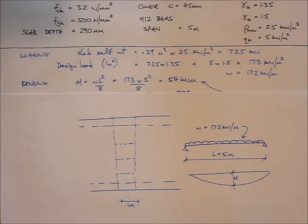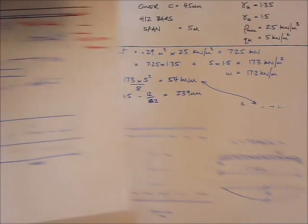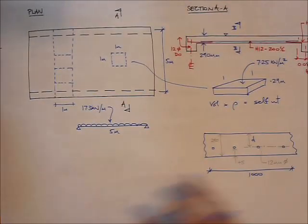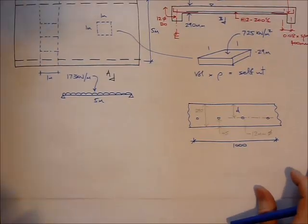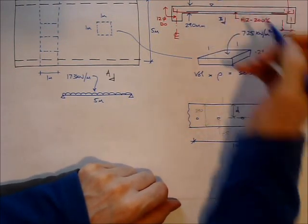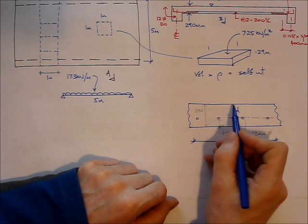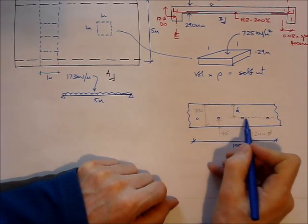Now the next job we have to do is calculate the effective depth. The effective depth is the distance from the top of the slab to the center of the steel reinforcement. I've drawn a cross section through the slab showing the effective depth from the top to the center of the reinforcement.